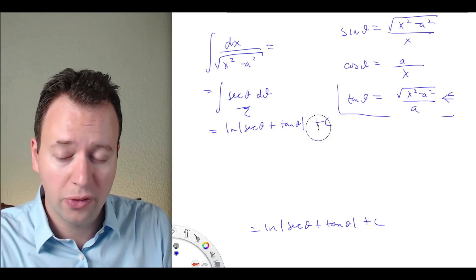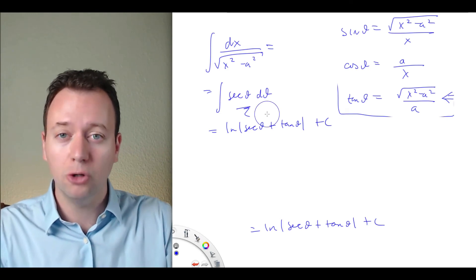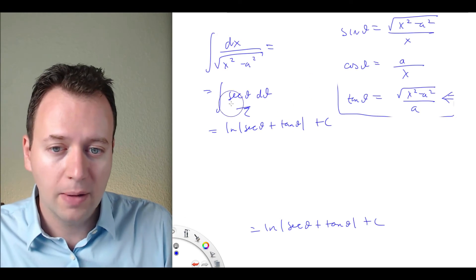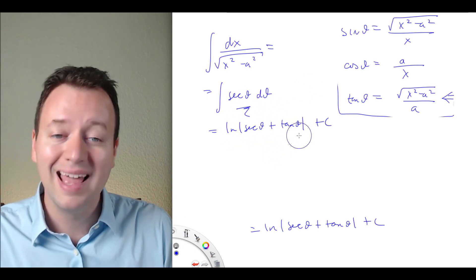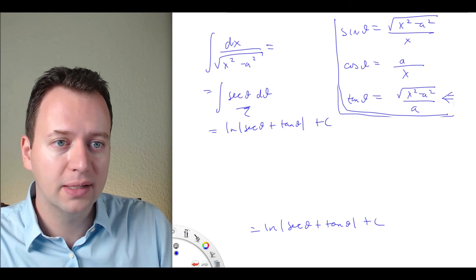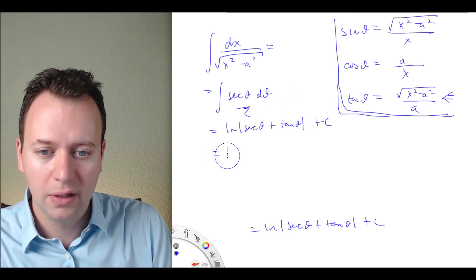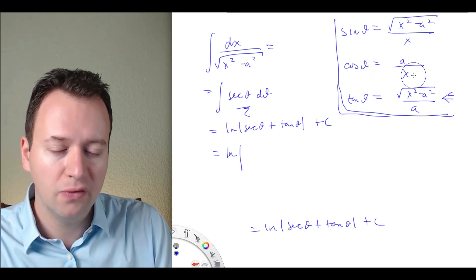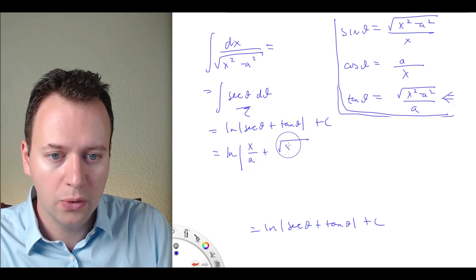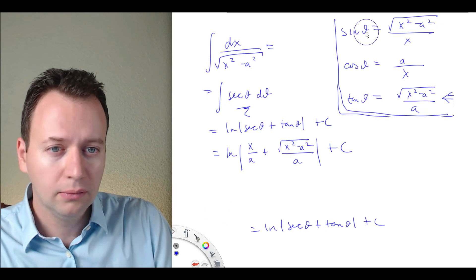So the integral of secant theta dθ equals ln of the absolute value of secant theta plus tangent theta plus c. As a bonus, you might try to figure out the integral of cosecant theta using the same sort of trick, using cosecants and cotangents instead of secants and tangents. Now we have to substitute back in using our saved relations. Secant theta equals x over a, and tangent theta equals the square root of x squared minus a squared over a. So the answer is ln of the absolute value of x over a plus the square root of x squared minus a squared over a, plus c.